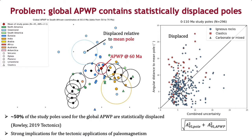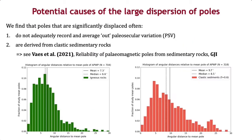In a recent paper by Dave Rowley, it was shown that about 50% of the study poles used in the recent global APWP are statistically distinct, using the traditional combined uncertainty metric shown in the bottom right corner here. If the poles used for the global APWP are themselves statistically distinct from the pole path, this would of course have strong implications for the tectonic applications of paleomagnetism, like discerning tectonic rotations.